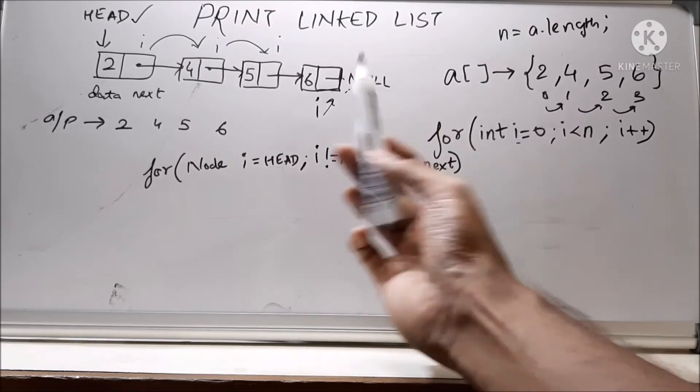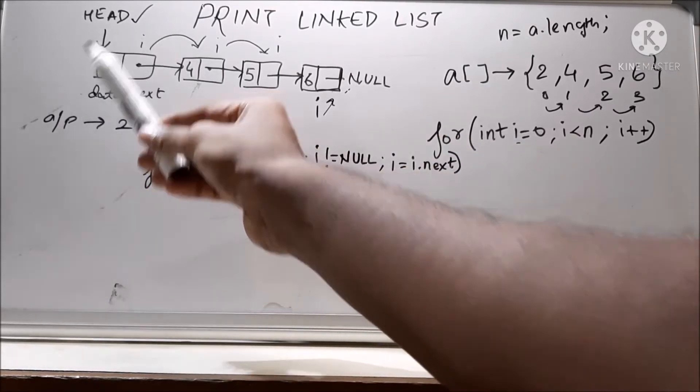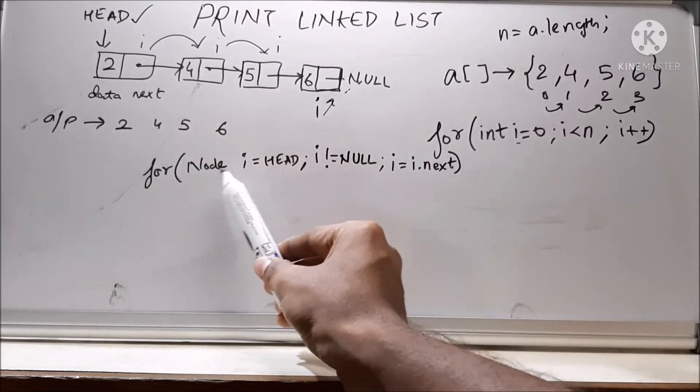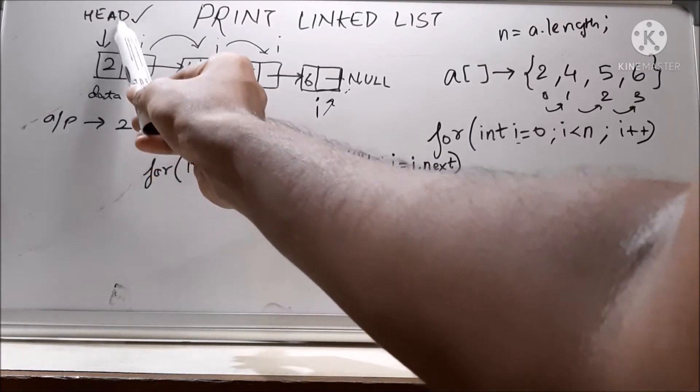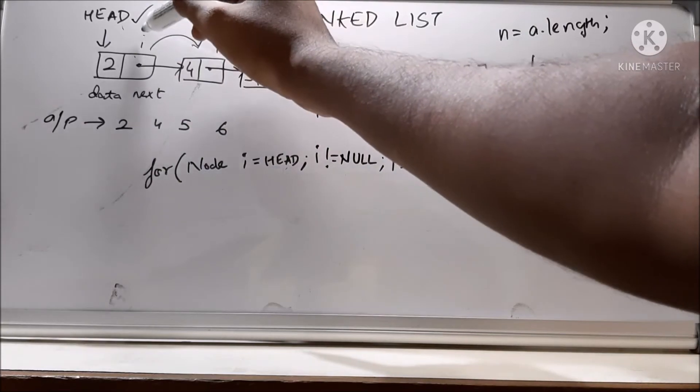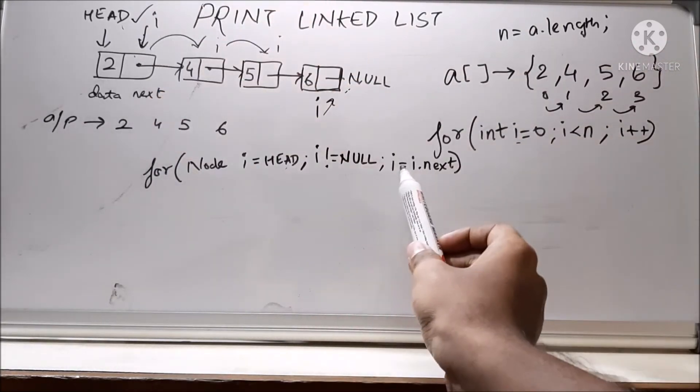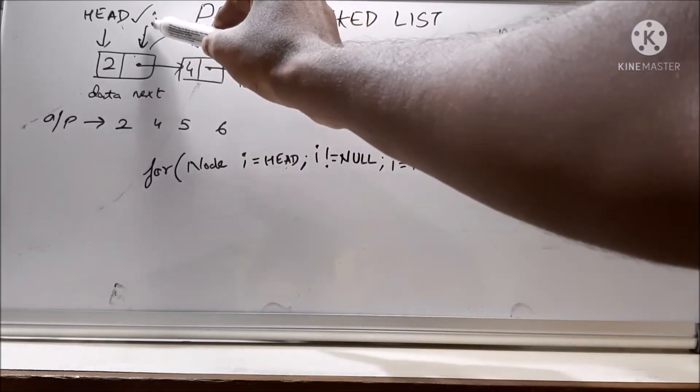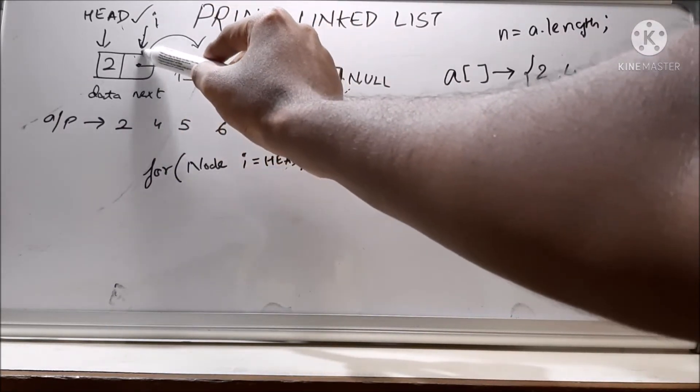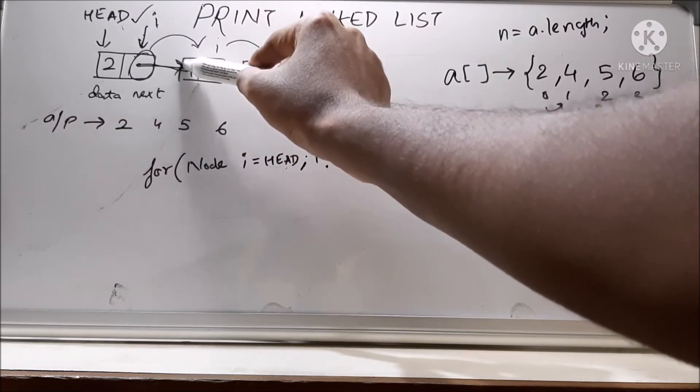Why we are doing i dot next? Let's say i is here initially, because we have said i is equal to head. So i will be placed over here. So i is also pointing over here. Now we will say i equal to i dot next. What is i dot next? i dot next has the address of the next node.